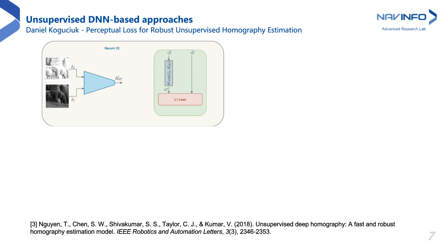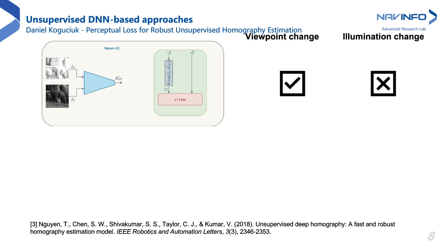To mitigate this issue, Nguyen introduced an end-to-end unsupervised approach. First, a homography is estimated using both input images, and then homography estimation is learned by comparing the per-pixel intensity of the warped source image and target image. Models trained using this formulation perform surprisingly well, even for images with big viewpoint differences. However, they are not robust to big illumination changes and cannot be used in real-life scenarios.